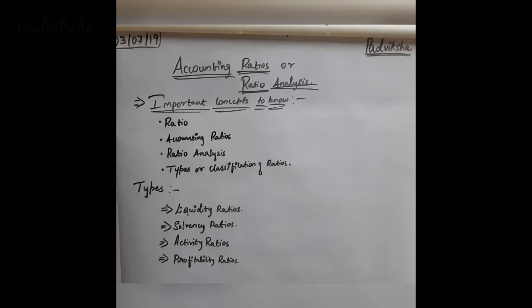So before going into ratio analysis, let us know the basic concepts of ratios. Our first concept is Ratio. Ratio is an arithmetical expression of relationship between two related or interdependent items. So, Ratio na enana, the relationship between two items which will be both related and interdependent. So, this is known as Ratio.